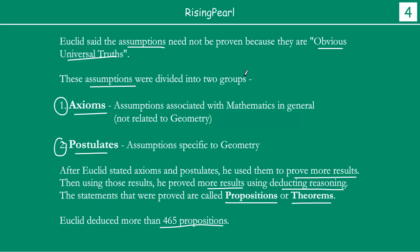So not only did Euclid start by compiling all of the known work at that time, but after completing that, he started expanding on what was available to him and created more than 465 theorems or statements which were proven to be true. He proved why each of them was true. These form the famous treatise that we are referring to.